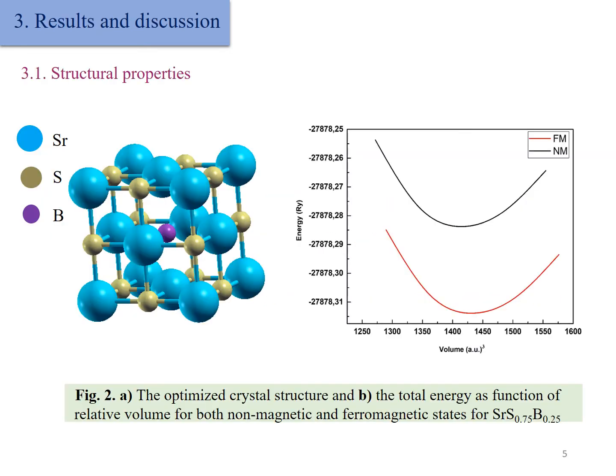We move to the results and discussions. For structural properties, we have optimized the crystalline structure by calculating the total energy as a function of the volume and fitted it into Birch-Murnaghan equation of states.